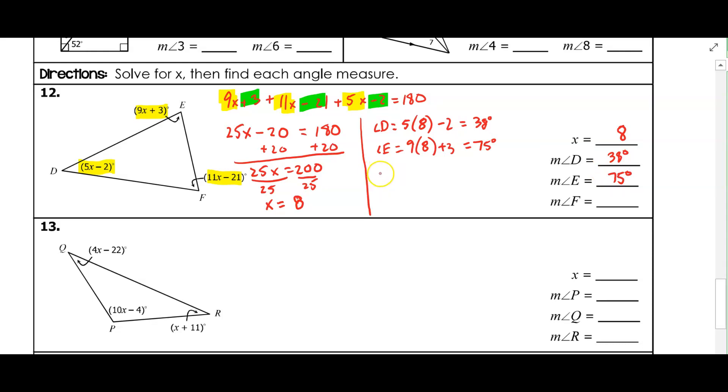And then angle F is 11 times 8, minus 21, which is 67 degrees.